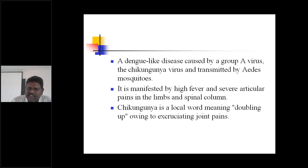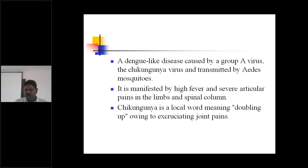Chikungunya is manifested by high fever and severe articular pains in the limbs and spinal column. When infected with the Chikungunya virus, you will get high temperatures and severe joint pains. The limbs and spinal cord will be severely affected with severe pain in the joints, limbs, and the spinal column.